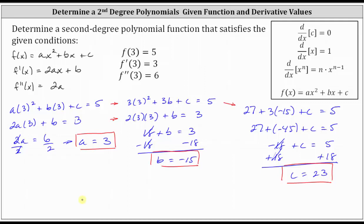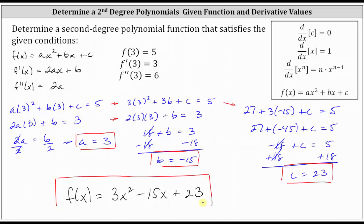Now that we know the values of a, b, and c, a second degree polynomial function that satisfies the given conditions is f of x equals three x squared minus 15x plus 23. I hope you found this helpful.